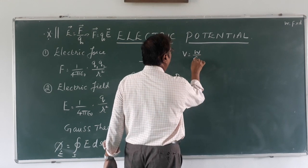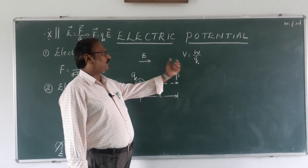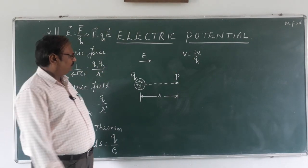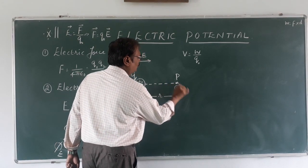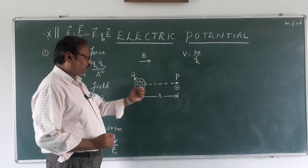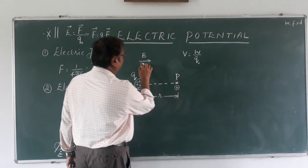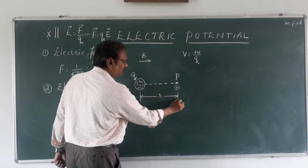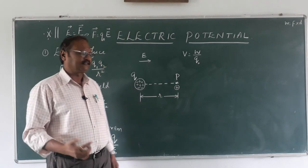Let us first define what we mean by electric potential. We use the symbol V. Electric potential is the work done in moving a test charge. For example, if I have a positive test charge q naught, I can move it in two ways — I can take it from here and move it outward in the direction of the electric field.